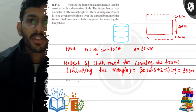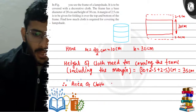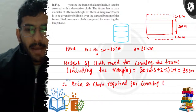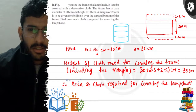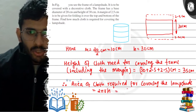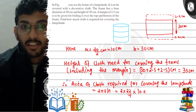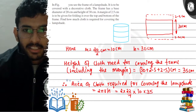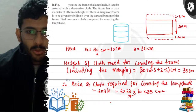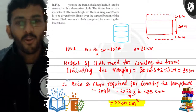The area of cloth required for covering the lampshade is the curved surface area of the cylinder, which is 2200 centimeters square. This is the final answer of the problem. I hope you understood the problem well. Thank you.